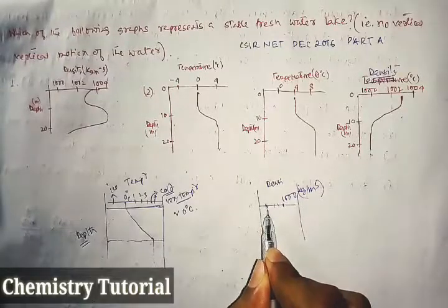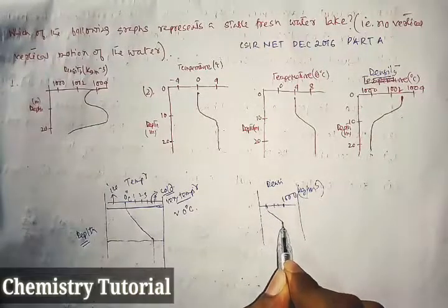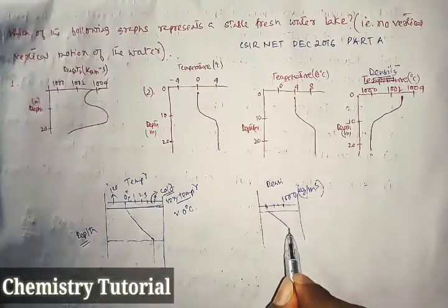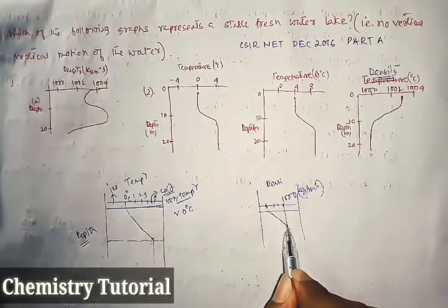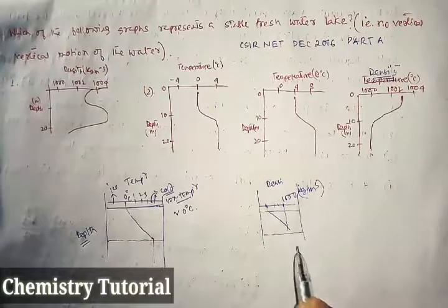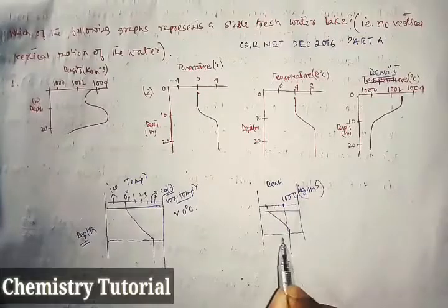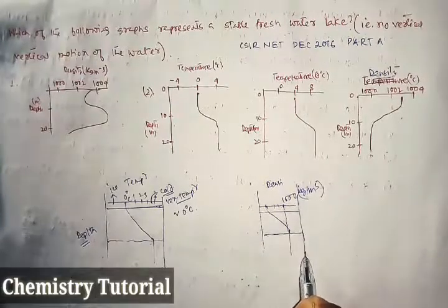As we go down, the density starts increasing after a while to 1000, which is the standard value of density for water, and it remains the same after a certain level of depth.